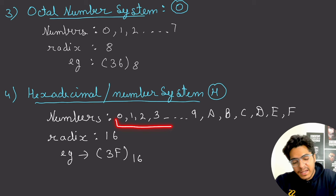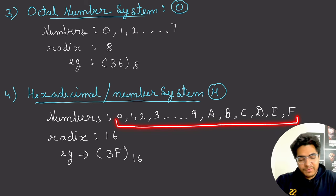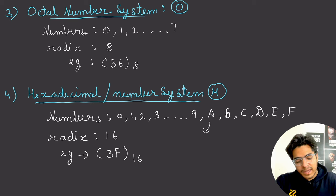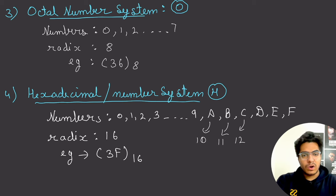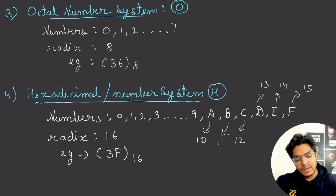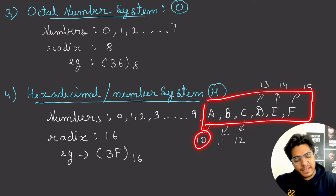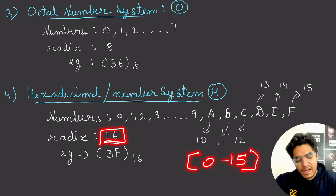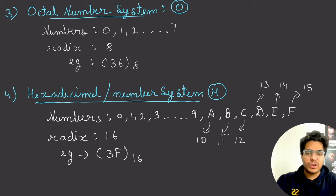The hexadecimal number system has base 16, with digits from 0 to F. After 9, we use letters: A represents 10, B represents 11, C represents 12, D represents 13, E represents 14, and F represents 15. So digits range from 0 to 15. For example, 3F is valid because both 3 and F (15) are less than 16.